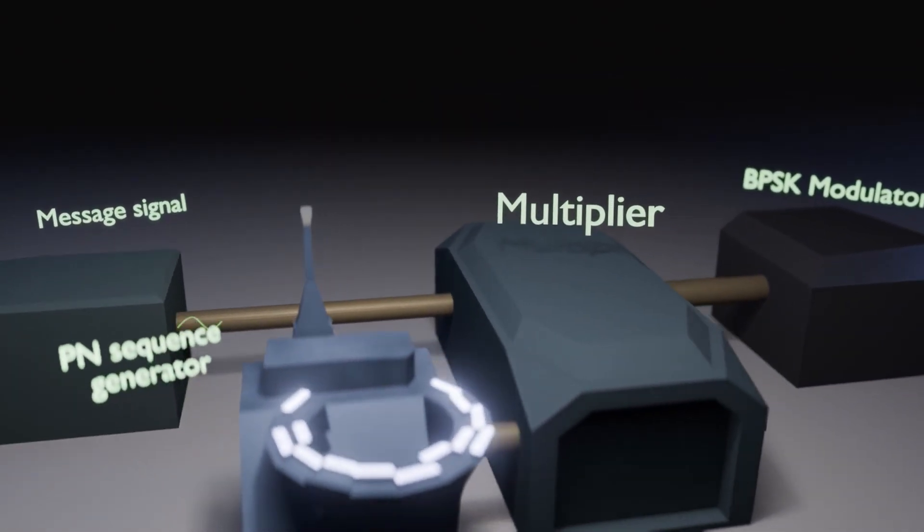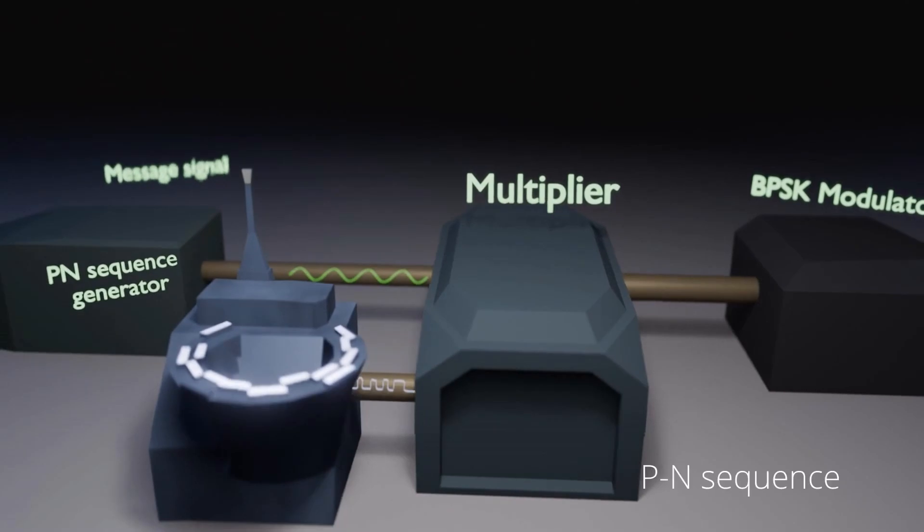PN sequences are used to spread the transmitted signal over a wider bandwidth, improving resistance to interference and jamming.